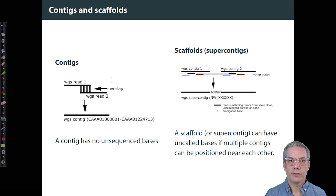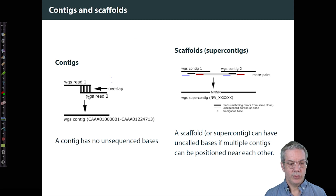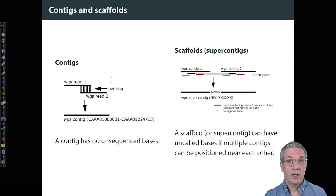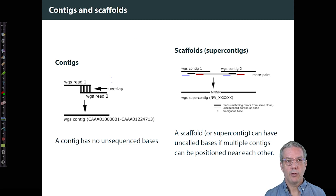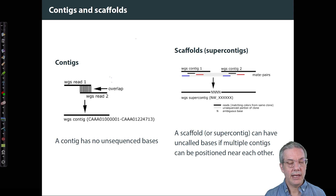Contigs and scaffolds have different but related meanings. In a contig, we have different reads that overlap. We have this read here and this read here, and they overlap in a region, allowing us to infer a sequence running from the beginning of one read to the end of another. That becomes a contig — it's composed of multiple reads stitched together by overlapping. You can remember the name because it's short for contiguous. A contig has no unsequenced or unknown bases anywhere in it.